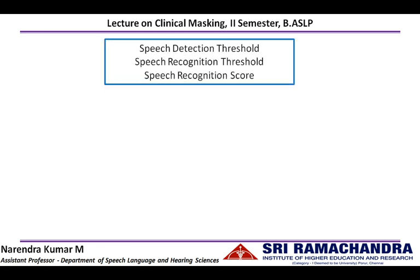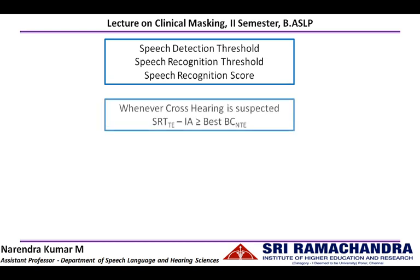In speech audiometry we track the speech recognition threshold and do supra-threshold speech test procedures like speech recognition score or speech identification score. In individuals where speech recognition threshold cannot be established, we rely on the speech detection threshold. Masking is required whenever cross-hearing is suspected. In speech audiometry, if the speech recognition threshold of the test ear minus interaural attenuation is greater than or equal to the best bone conduction threshold in the non-test ear, then cross-hearing is suspected.